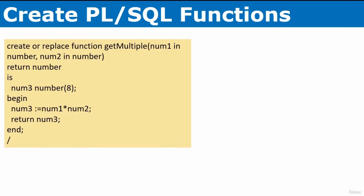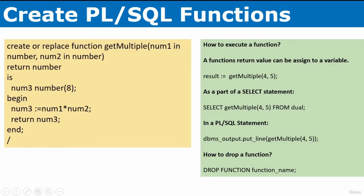The second function is called get_multiple, which has multiple parameters. The parameters include number_one and number_two, both with data type NUMBER, and the function returns a NUMBER. Inside, a variable called number_three is declared with data type NUMBER(8). In the BEGIN section, number_three is initialized as number_one * number_two, and the function returns that result. There are various ways to execute this function.